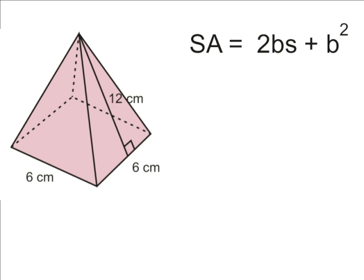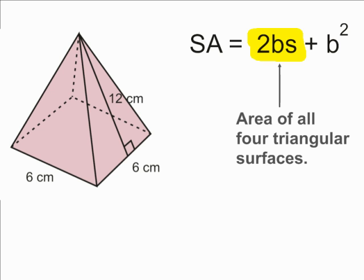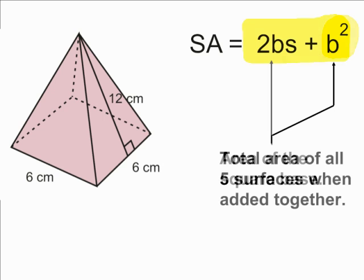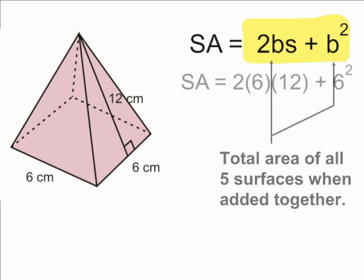The part of the formula located before the plus sign will simply find the area of all four triangular surfaces. The part of the formula after the addition sign basically finds the area of the square base. After solving the part of the equation before the addition sign as well as the part after the addition sign, we simply add these two values together to get the surface area of our square pyramid.